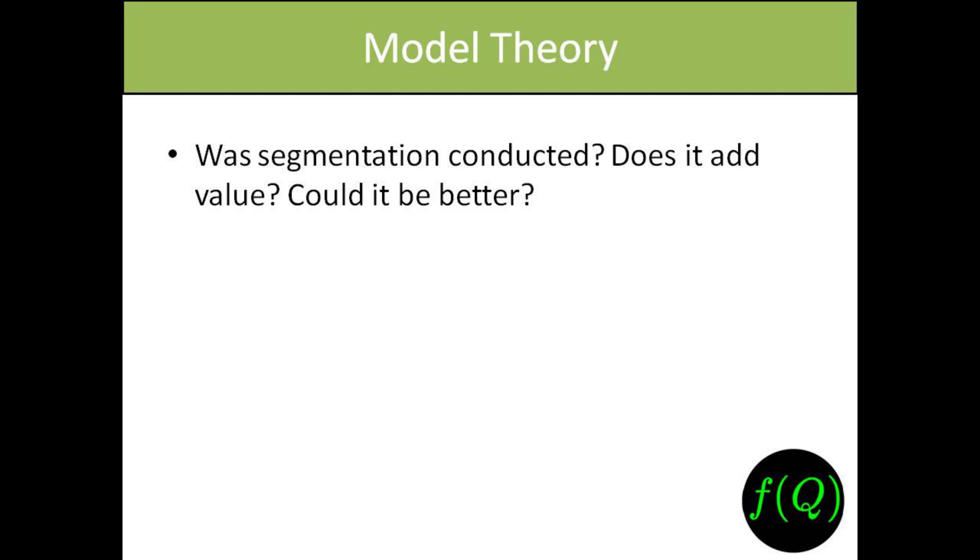Now, model theory. Was segmentation conducted and does it add value, or could it be better? You need to test the segmentation to make sure it was done correctly. Validation can find better ways to segment the data — drawing on past experience at other banks can help. If segmentation could be improved, write a limitation or recommendation. If it's done incorrectly and poorly, write a finding.